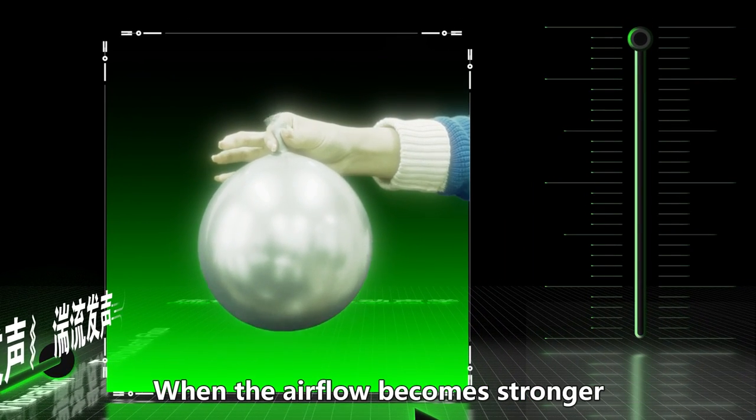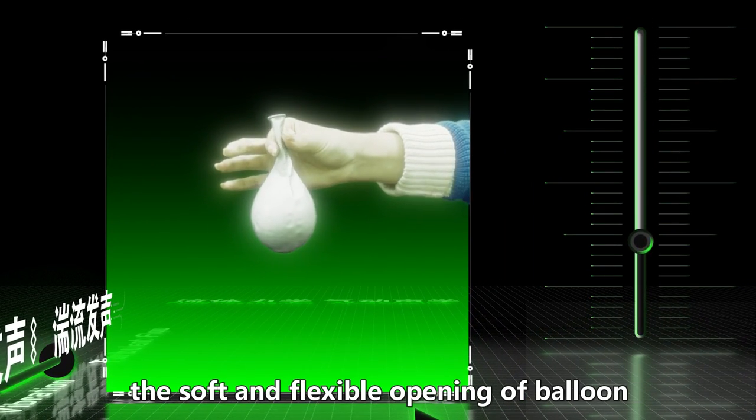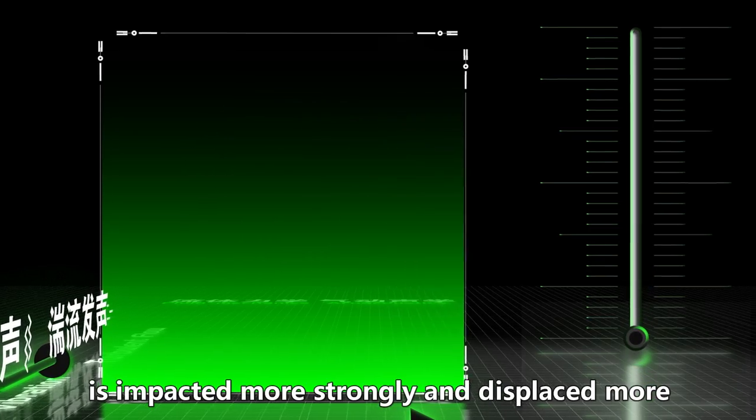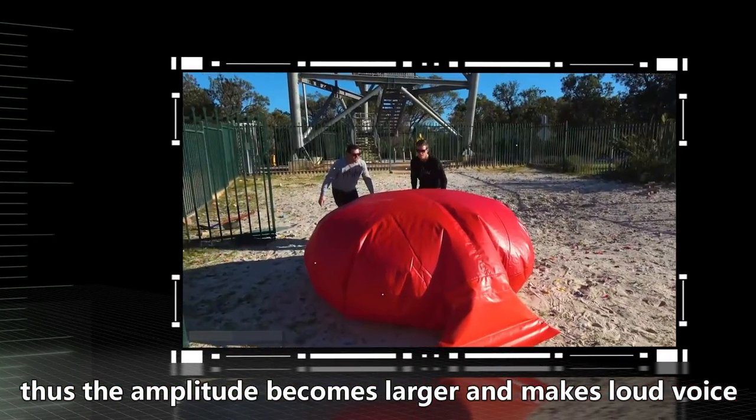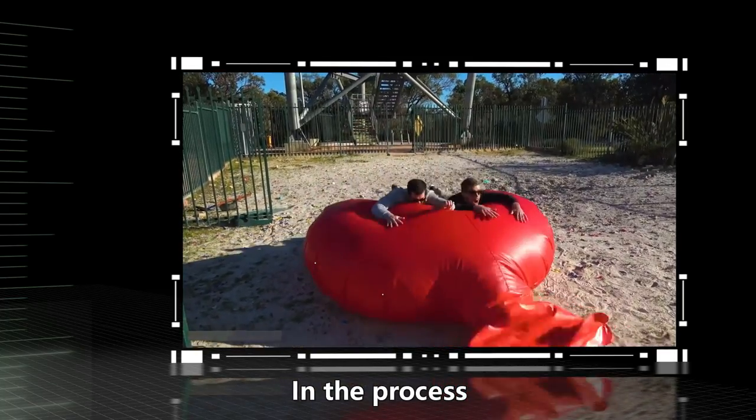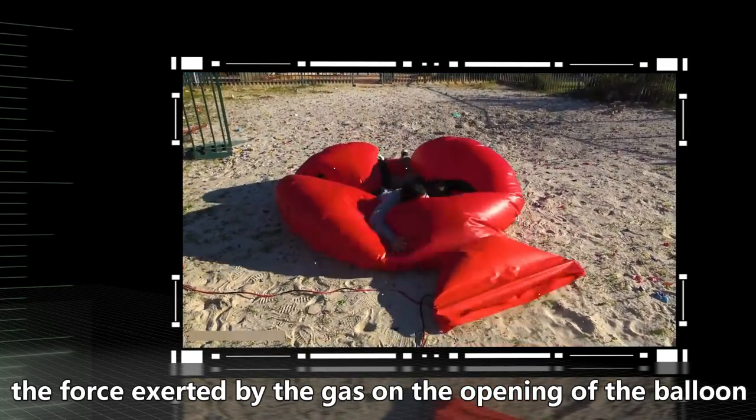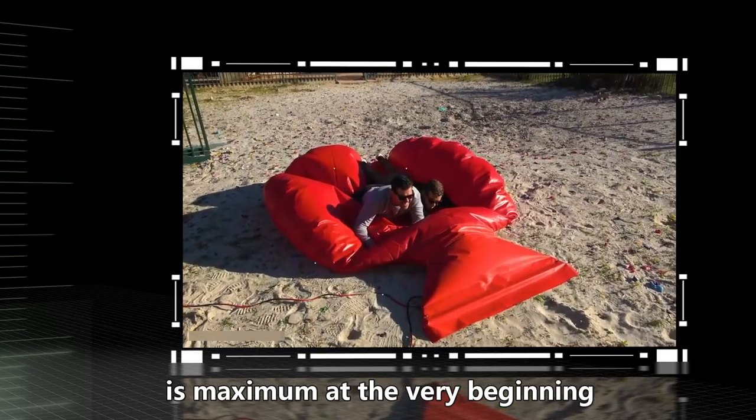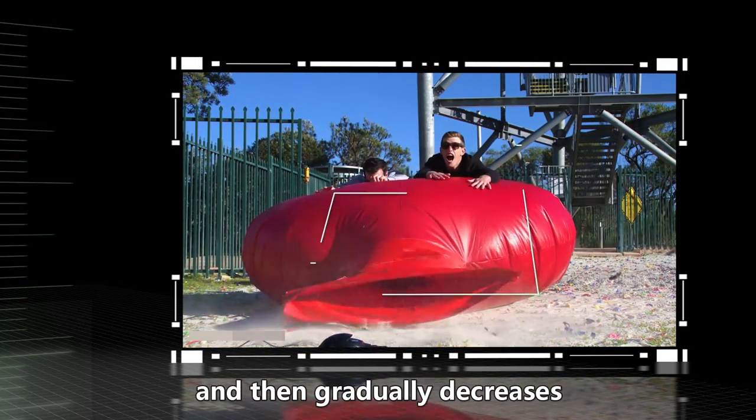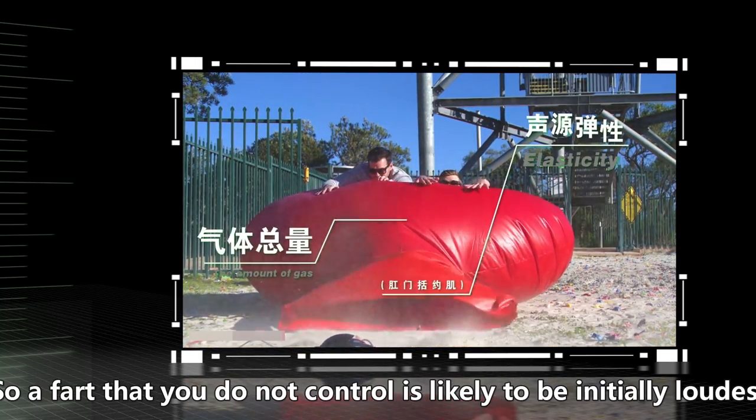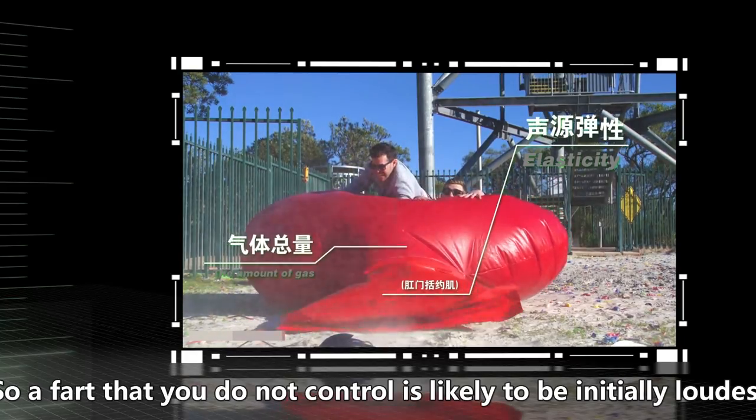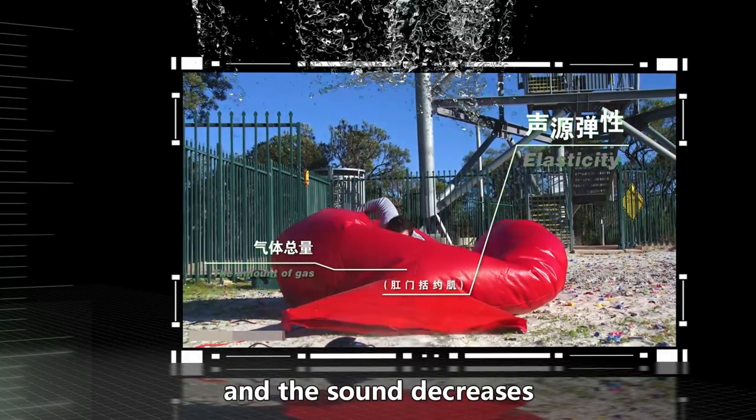The airflow causes the membrane of the flute to vibrate and make sounds. When the airflow becomes stronger, the membrane is strongly impacted and displaced more. Thus, amplitude becomes larger and makes a loud voice. In the process, the force exerted by the gas on the membrane is maximum at the beginning, and then gradually decreases.